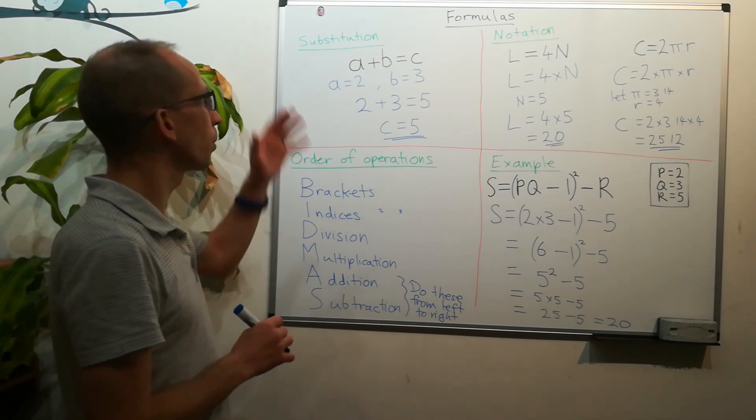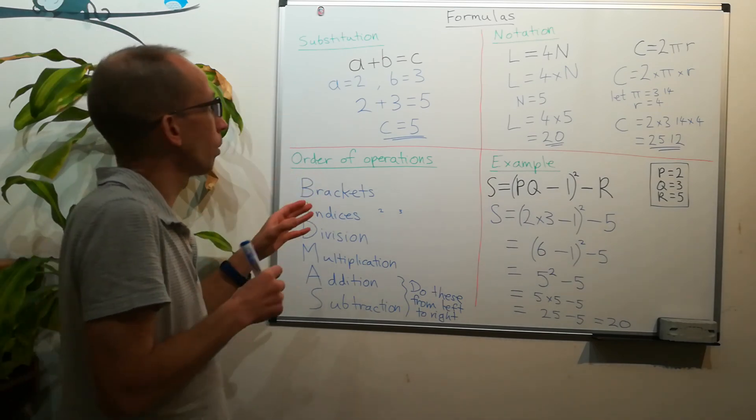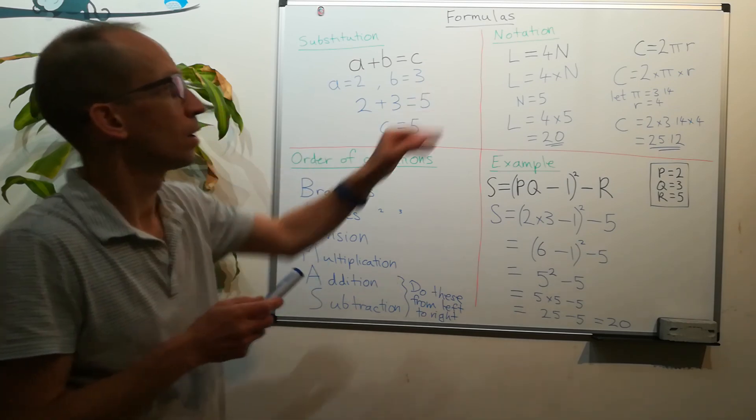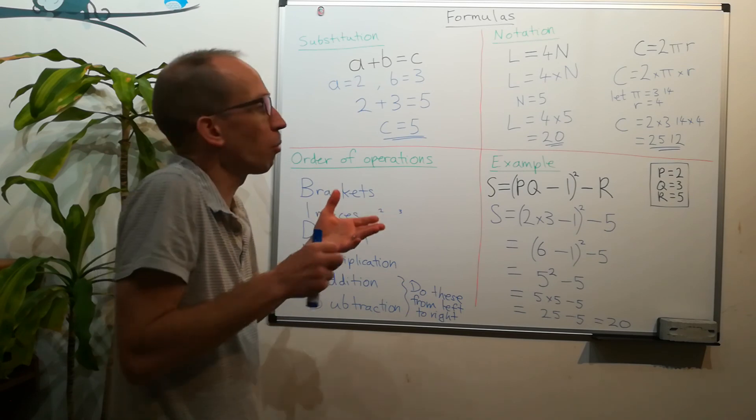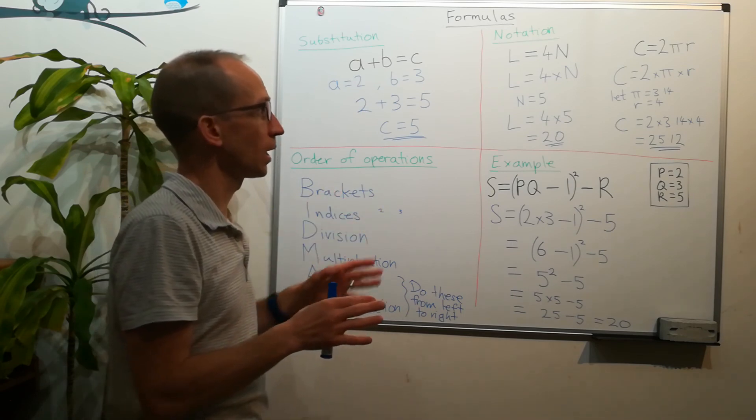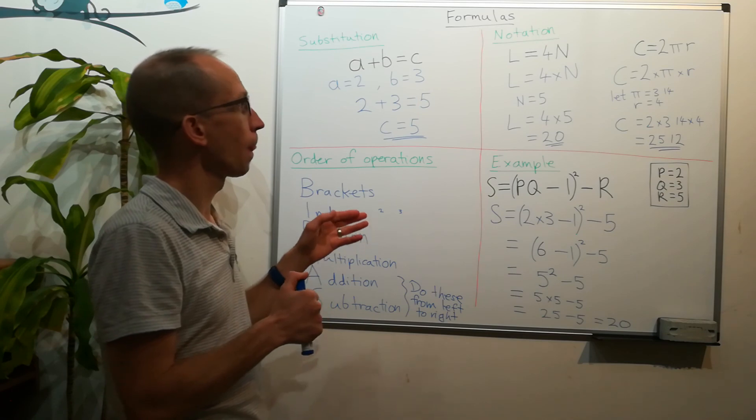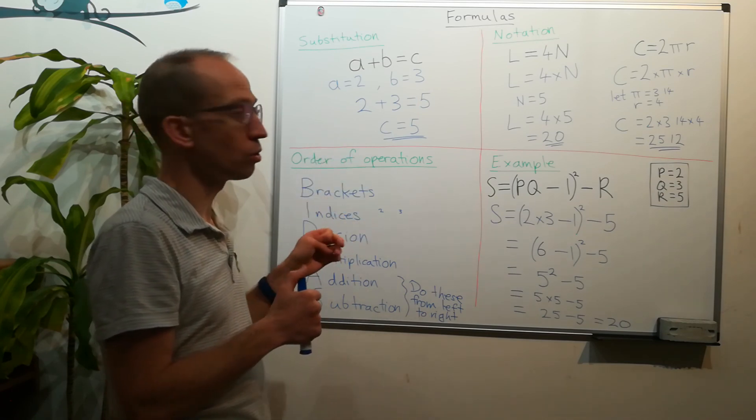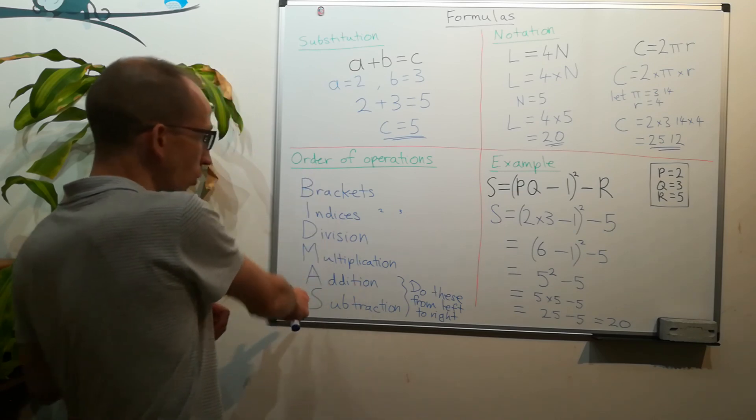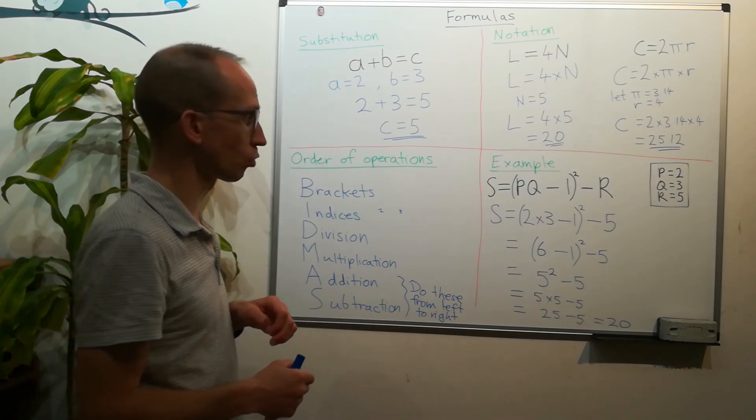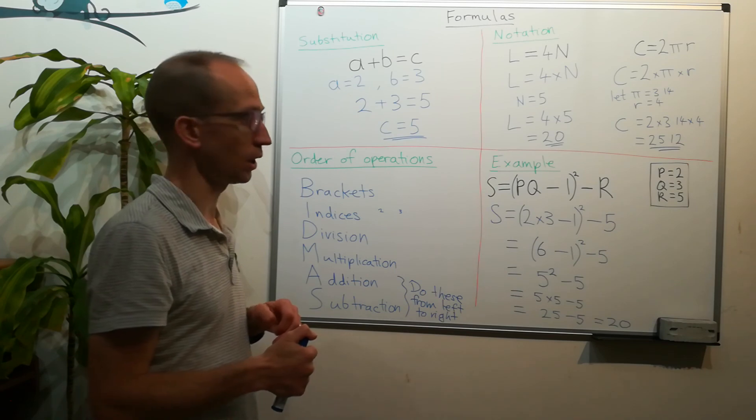So the key thing with formulas is to not overthink them. You might be given, let's say, a formula like this and you might think, oh I can't remember anything about circles. It doesn't matter. If they've given you the formula and they've given you what values to use, you just insert them in, make sure that you're referring to your order of operations rules, and see what answer you get at the end.